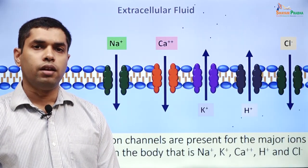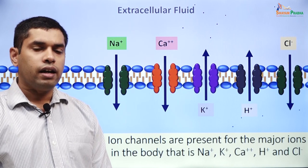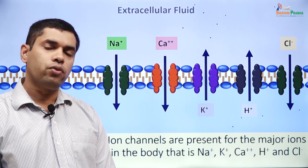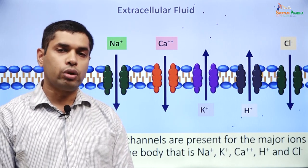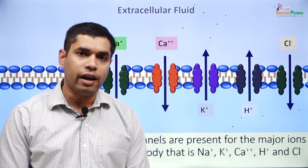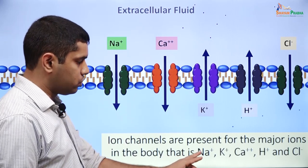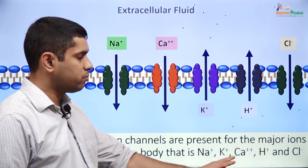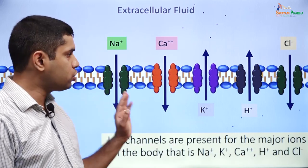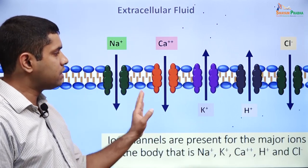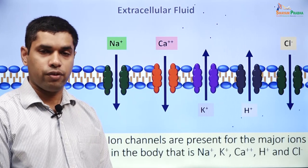Ion channels in the body are present for all major ions. The major ions we see in the body are sodium, potassium, calcium, protons, and chloride, and each of them has a specific ion channel for itself.